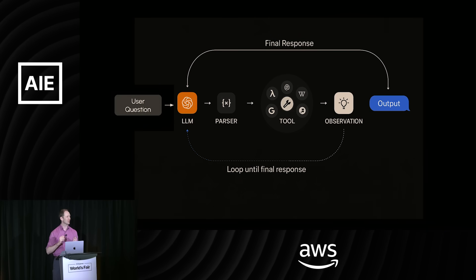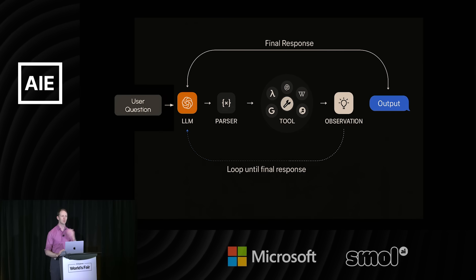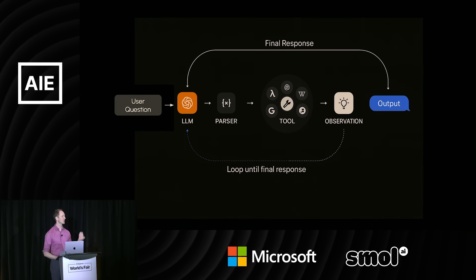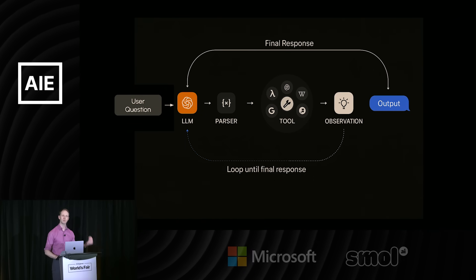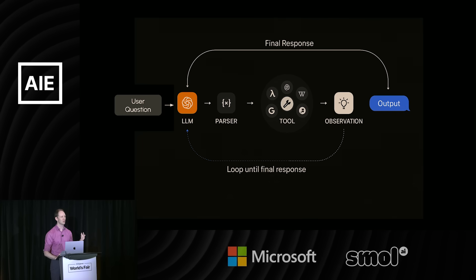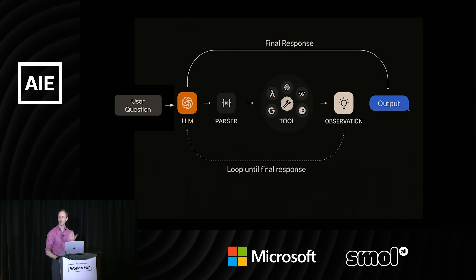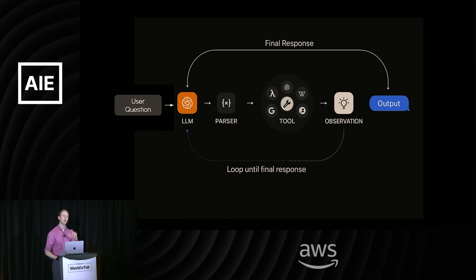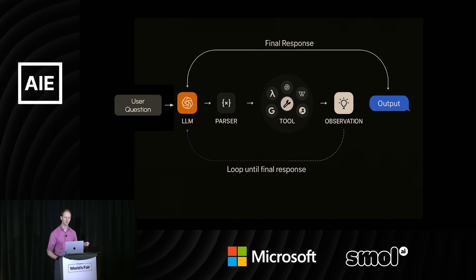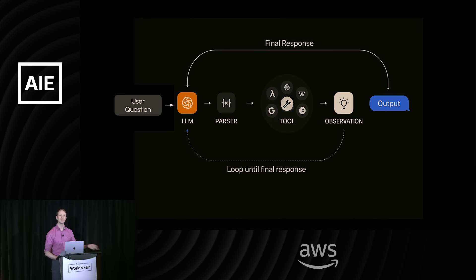Starting with tool use — it's a really powerful and simple idea in principle. We're working with foundation models, autoregressive generative models that predict one token at a time, typically predicting natural language. But they can also output function calls. If you expose tools and functionality to this language model, the agent can now invoke functions, exposing the full range of tools available over APIs. It requires a great degree of discernment to decide which functionalities to expose. This operates in a loop: you apply the parser to the outputted text, invoke the tool, get a response or observation, provide more information to the agent, and continue this loop until you generate the final output for the customer.